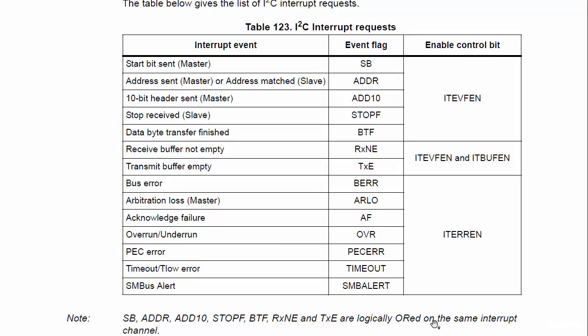Now let's explore the error interrupt. There are different types of errors that may happen during I2C communication, and there are respective flags which go high when a particular error happens. If you enable the error control bit, setting of any of these flags will trigger an interrupt on the error line. Some of the I2C-specific errors are as follows.